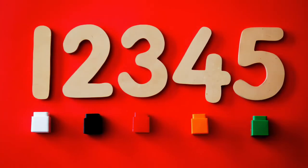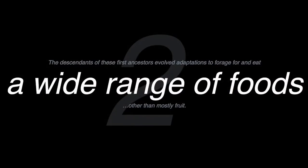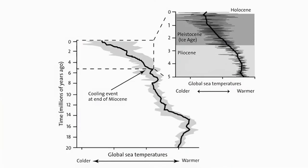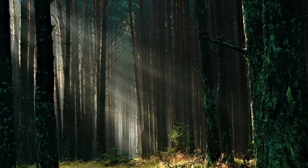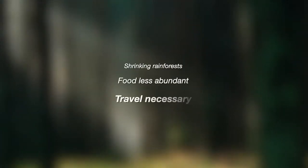That first transition — upright bipedalism — opened the door for the second major transformation, which involved the descendants of these first ancestors: the Australopiths, who evolved adaptations to forage for and eat a wide range of foods other than mostly fruit. Between 10 and 5 million years ago the entire Earth's climate cooled considerably. Although this happened over millions of years, the overall effect in Africa was to cause rainforests to shrink and woodland habitats to expand. As the forest shrank and became woodland, the ripe fruits our ancestors hungered after became less abundant, more dispersed and more seasonal.